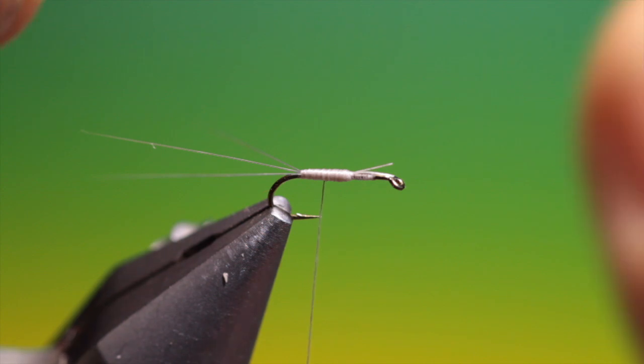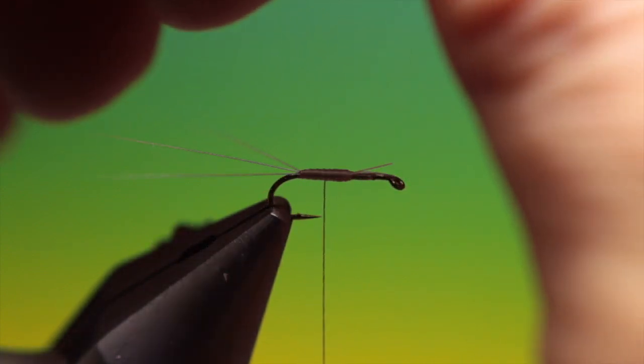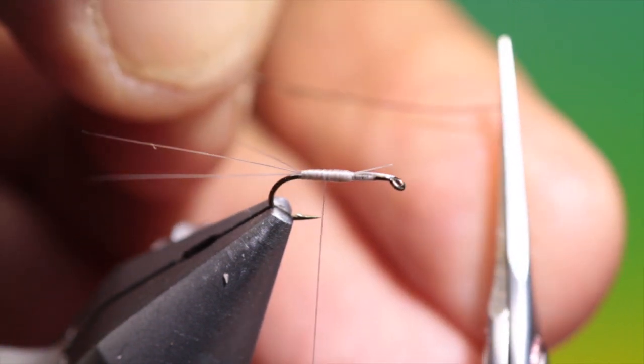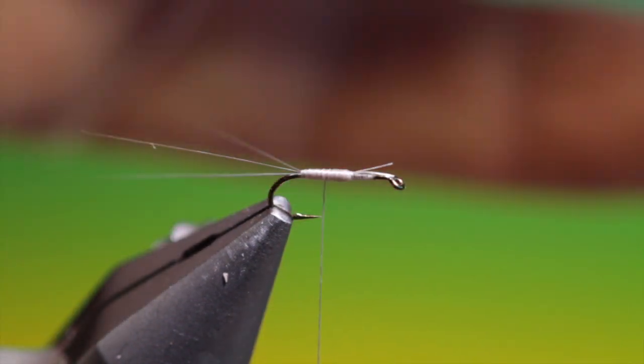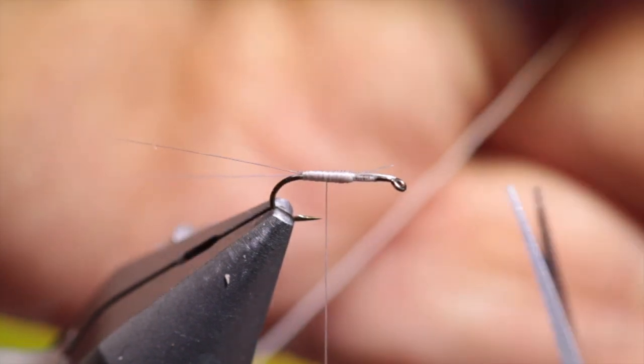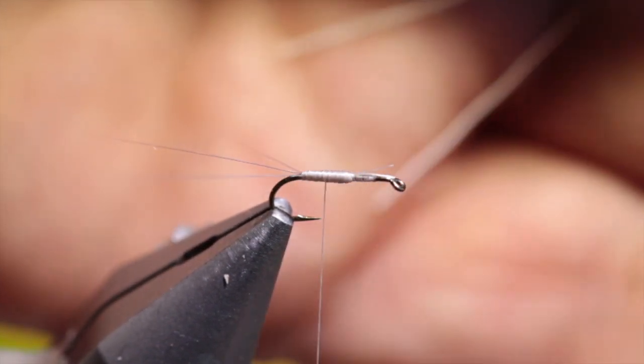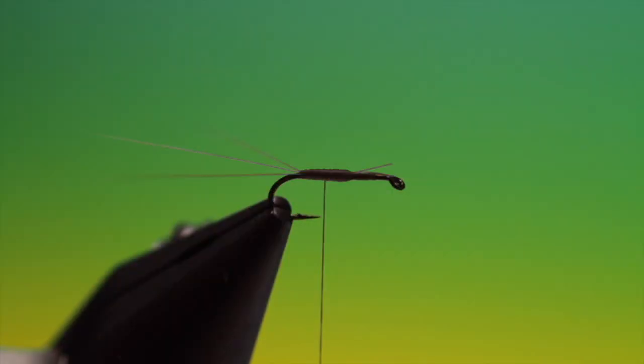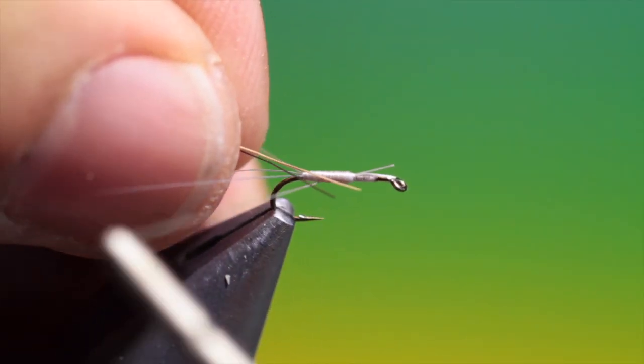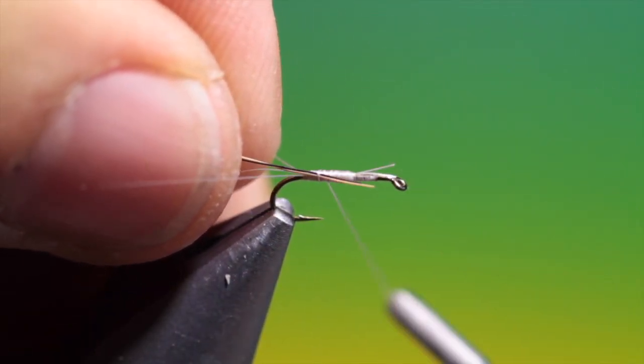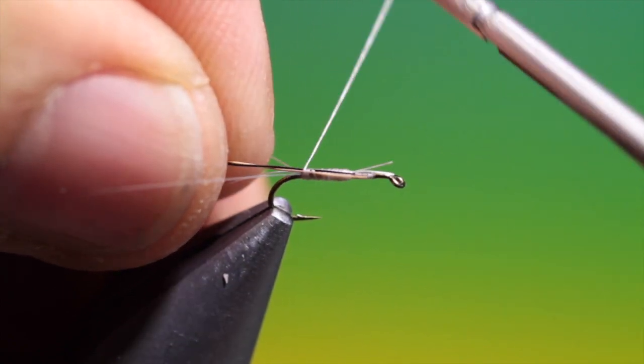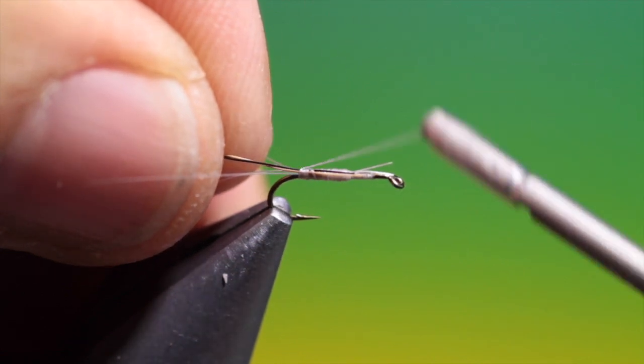Then we need two moose hairs. One brown, one black. Try and choose fine tapered ones and then we'll trim off the ends. And make sure that they're the same length at the butt ends. Otherwise you'll find difficulty in winding them. So we'll tie in these two moose hairs.